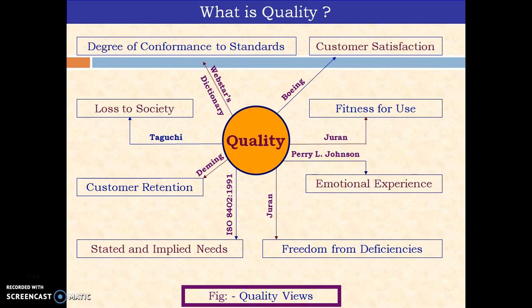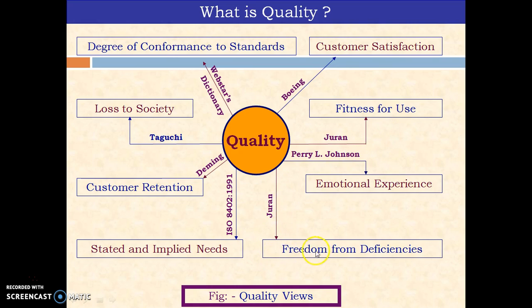There are different ways in which we can define the term quality, as it is a very relative term. One dictionary may define it as a degree of conformance to standards. Dr. Taguchi defines it as a loss to society. Dr. Deming has defined it for business as customer retention. Dr. Juran has defined quality for process or product as fitness for use, or alternatively as free from deficiencies.